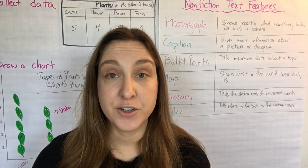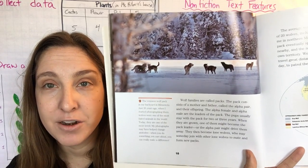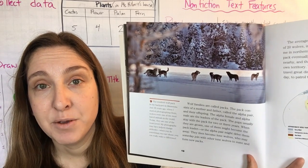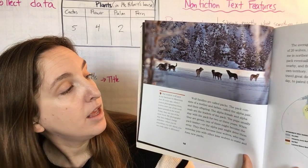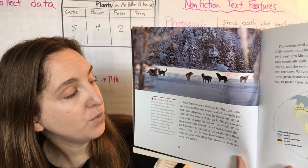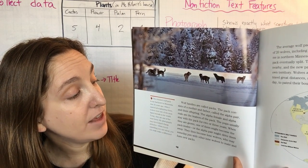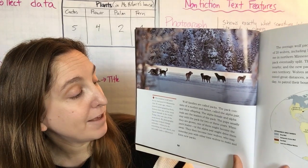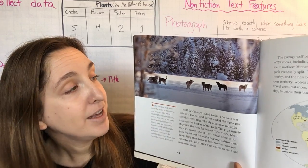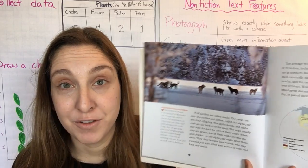Now there are some text features on these pages I'd like to look at more carefully. There's another photograph — looks like part of the pack, maybe out on the ice somewhere, definitely very cold and snowy. The caption says: the resident wolf pack in my backyard in Minnesota. Just 35 years ago, when I started photographing them, wolves were one of the most hated animals in the world. Today they are one of the most loved. My photographs may have helped change attitudes. When you do something you care about, you can really make a difference. That's probably why he loves photographing wolves — he knows it changes how people feel about them.